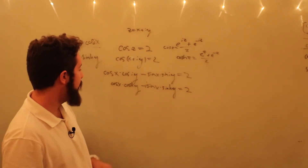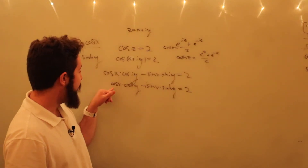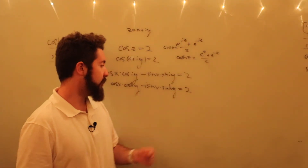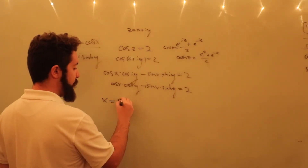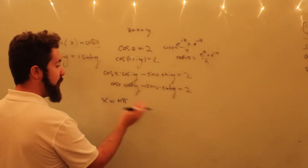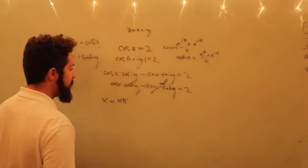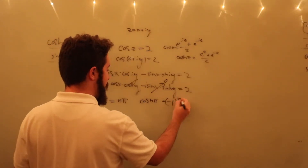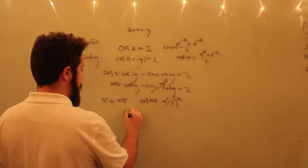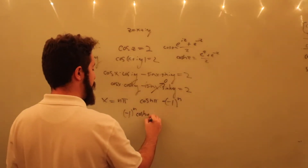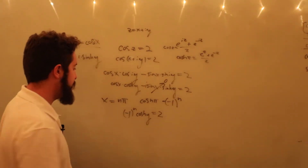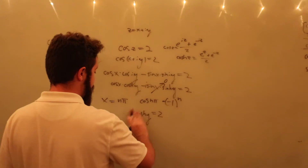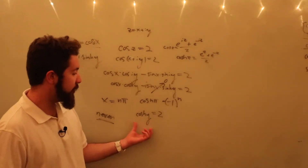There are two possibilities: either y equals zero, since that's the only zero of the sinh function, or x has to equal a multiple of π. If y equals zero, then cosh(y) = 1, and we're left with cosine(x) = 2 for a real number x, which is clearly not possible. So we conclude x must equal some integer multiple of π — that is, nπ — making that imaginary term disappear. Then cosine(nπ) = (−1)^n, so (−1)^n · cosh(y) = 2. We must choose n even so this is positive, and now we need to solve cosh(y) = 2.